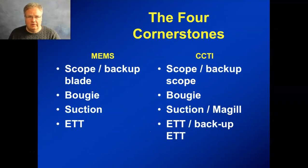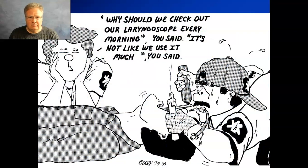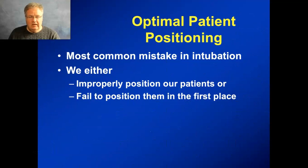We talk about the four cornerstones of airway management, specifically of intubation. In EMS, it's the scope and the backup blade, the bougie, the suction, and the endotracheal tube. In critical care training institute settings, it's the scope and the backup scope, the bougie, suction, the McGill, an endotracheal tube, and a backup endotracheal tube. Having these four cornerstones in place greatly increases your chances of success.